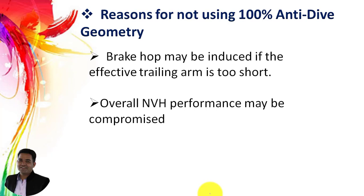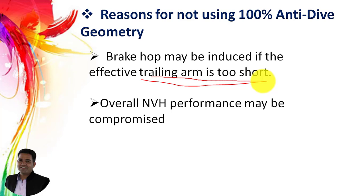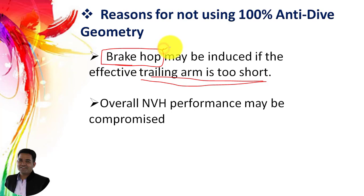To design 100% anti-dive suspension geometry we need to design a short trailing arm. The trailing arm analysis was covered in the anti-squat and anti-pitch drive geometry videos, so you can refer to those. If we are designing a 100% anti-dive geometry, the trailing arm length will be shorter and this will create brake hop — a type of negative defect in braking.